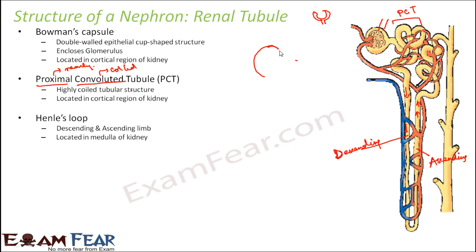When you think of the structure of the kidney, this outer portion is the cortex, and these inner portions are the medulla. So if you think of this figure, this would be the Bowman's capsule, and then this is how the U-shaped structure would be. Just the U-shaped structure will be inside the medulla; the rest of the things will be in the cortex.